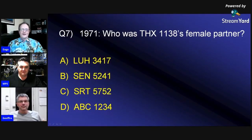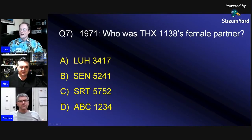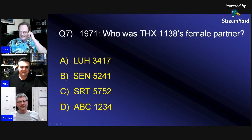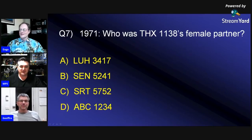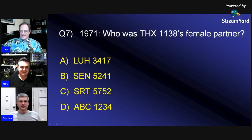1971. This is a more serious question. Who is THX 1138's female partner? Was it A, LUH 3417; B, SEN 5241; C, SRT 5752; or D, ABC 1234? I think I'm going to have a guess — I think it's A. Yeah, I'm going to say A because B is a radio station, isn't it? A sports entertainment network. Thomas is out of sequence, not good.